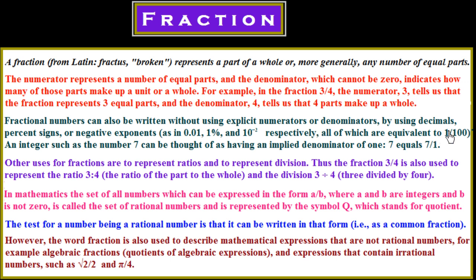We can use decimals, percentage signs, or negative exponents. For example, 0.01 can also be written as 1%, or as 10 to the power of minus 2 — all of which are equivalent to 1 over 100. An integer such as 7 can be thought of as having an implied denominator of 1.